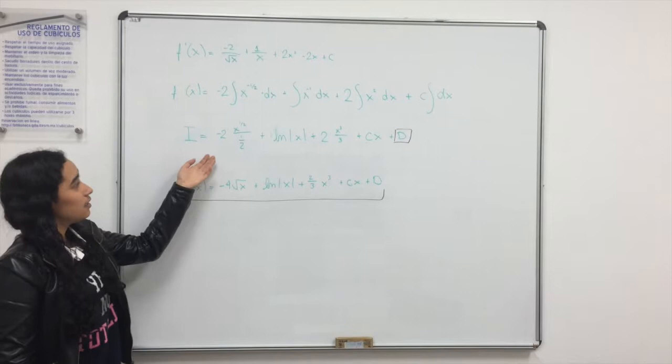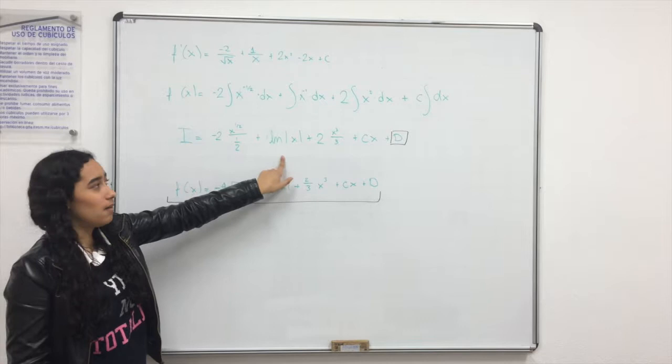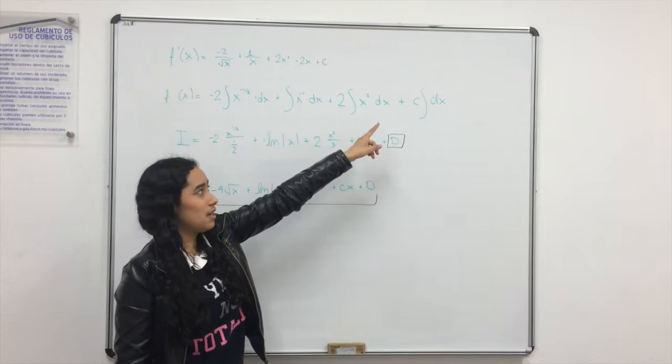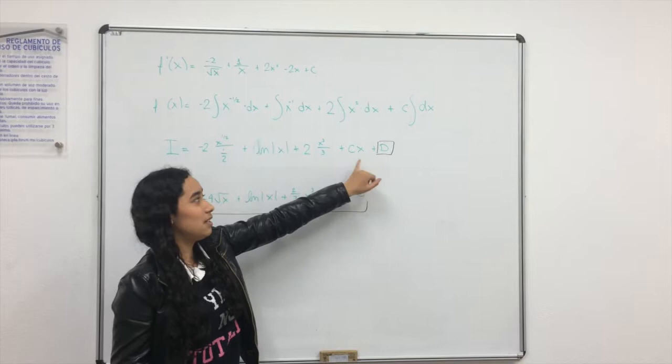And now we integrate this using the formula, and we know that 1 over x is logarithm of the absolute value of x. And we add x here because it is a constant, and we add like the next constant that will be d because it is a different number than c.